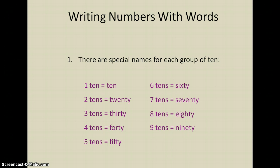For two-digit numbers, we have some special names for each group of 10. One group of 10 is just 10, but two groups of 10 is 20. Three groups of 10 would be 30, four groups of 10 would be 40, five tens is 50, six tens is 60, seven tens is 70, eight tens is 80, and nine tens is 90.